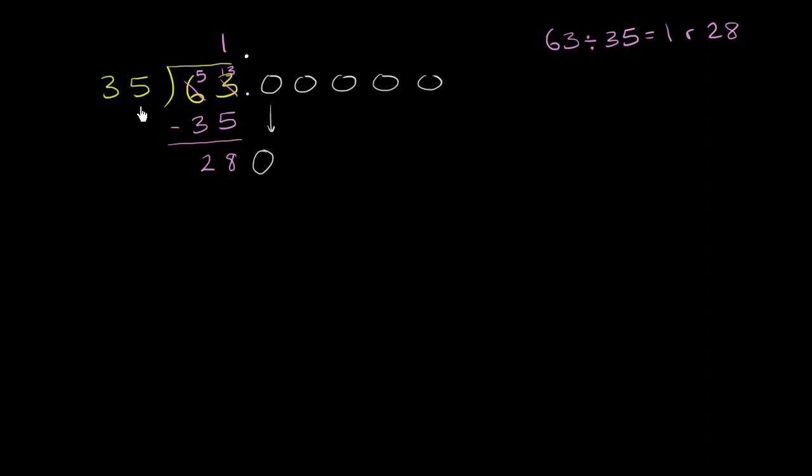And as always, this is a bit of an art when you're dividing a two-digit number into a three-digit number. So let's see. 40 goes into 280 seven times. 30 goes into 280 about nine times. So it's going to be between 7 and 9. Let's try 8.